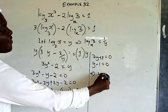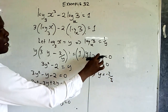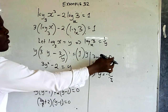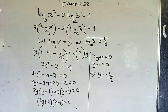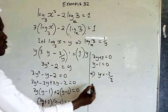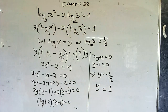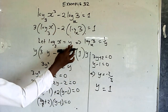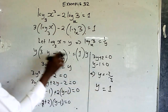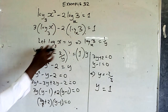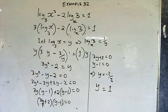This implies either 3y + 2 = 0 or y − 1 = 0. From the first, y = −2/3; from the second, y = 1. Recall that y was defined as log x to base 3, so we now back-substitute each value.